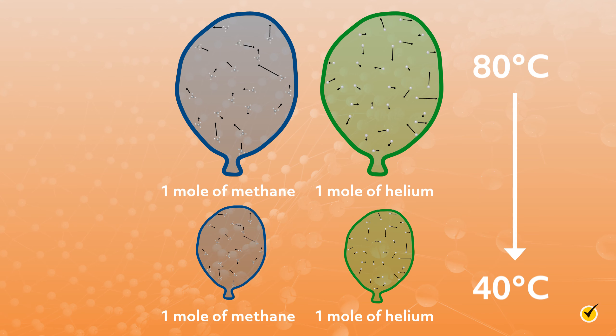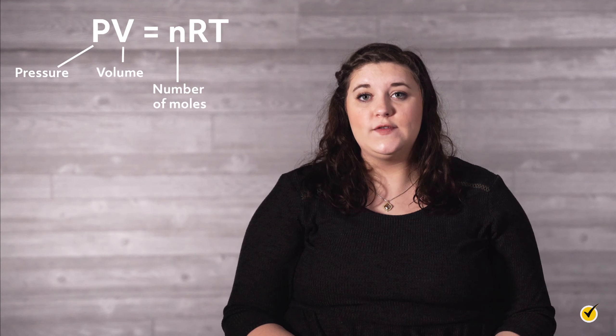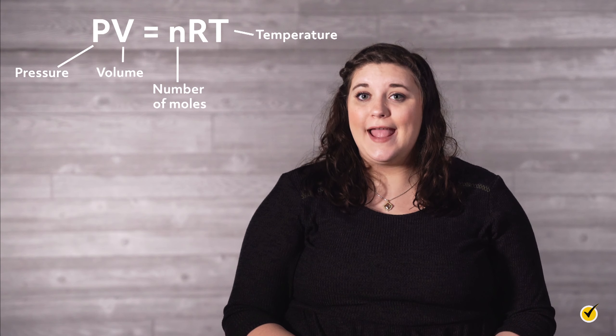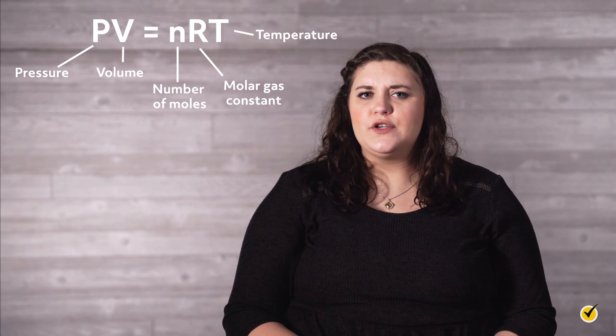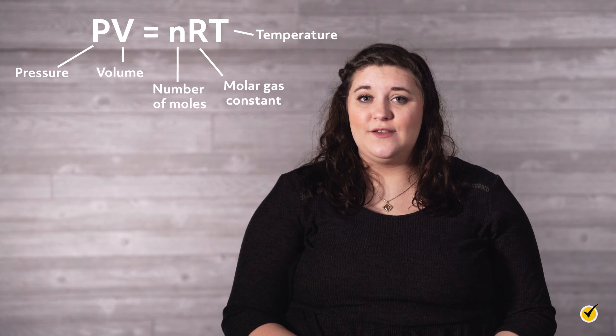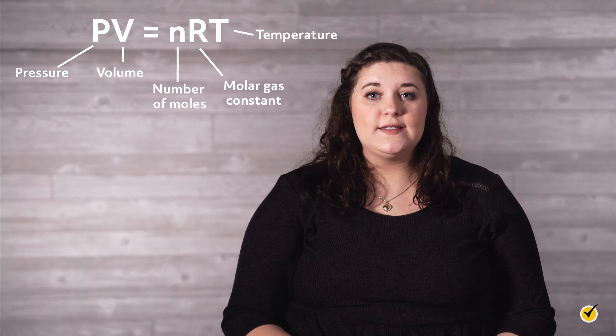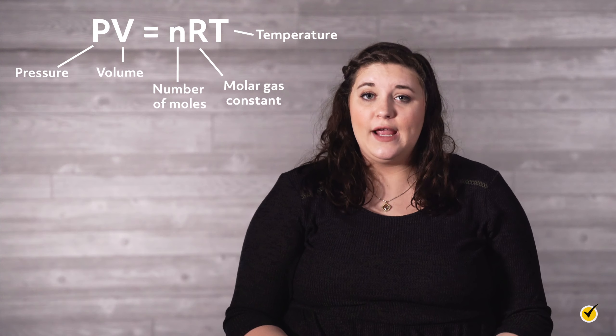Thus, scientists concluded that the molecular properties of the gases didn't matter much, and that their behavior could be described by one simple relationship, PV equals nRT. Here, P is the pressure of the system, V is the volume, N is the number of moles, T is the temperature, and R is the molar gas constant. Notice that there's no variable to describe the specific gas, which means we can use this equation to calculate these properties for any gas.